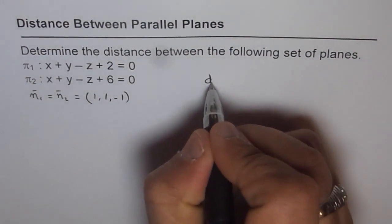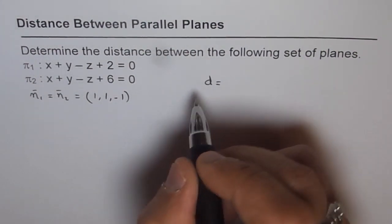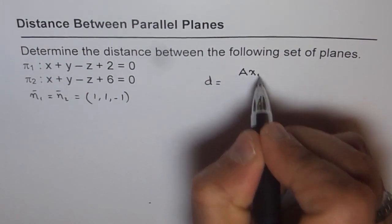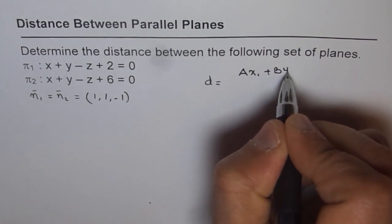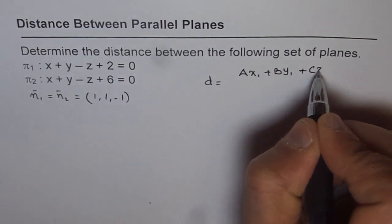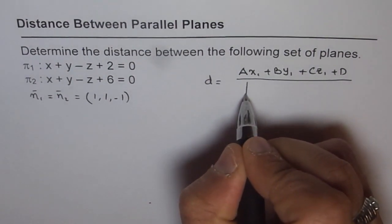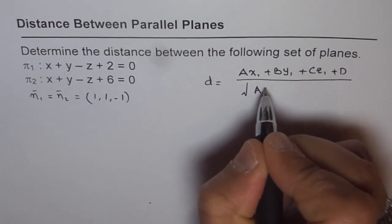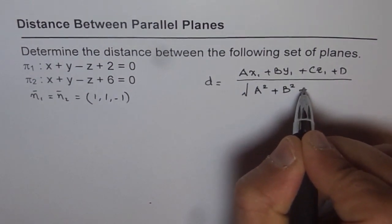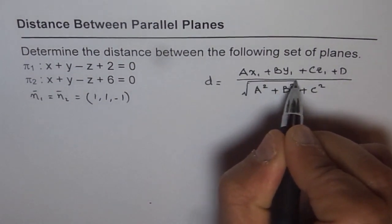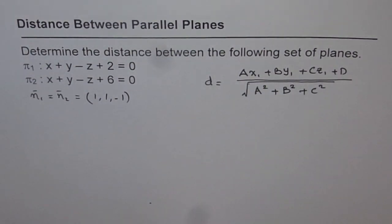As you remember, the formula for distance equals a x1 plus b y1 plus c z1 plus d over square root of a squared plus b squared plus c squared. That is the formula for finding distance between a point and a plane, where a, b, c are directions for the normal vector.